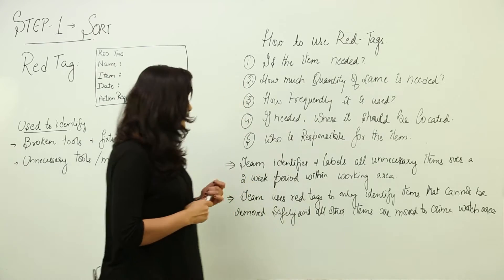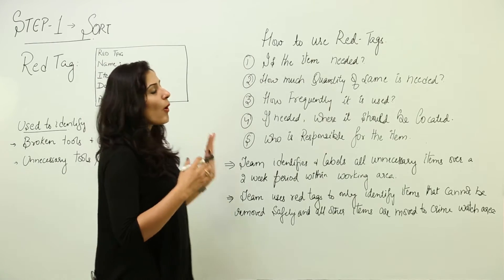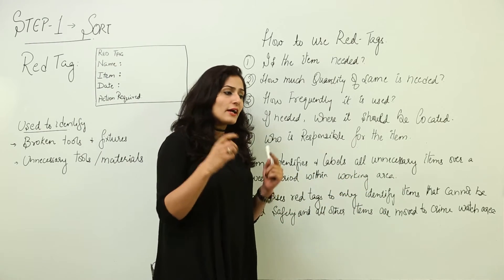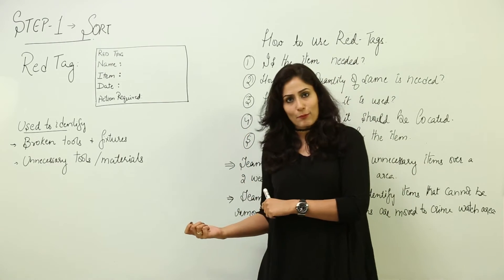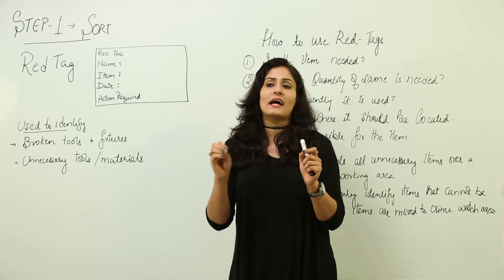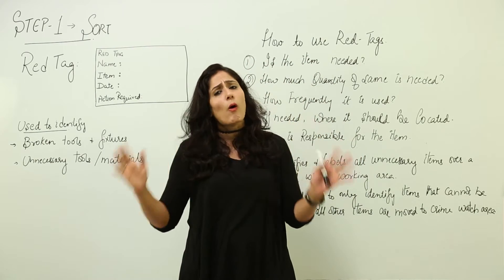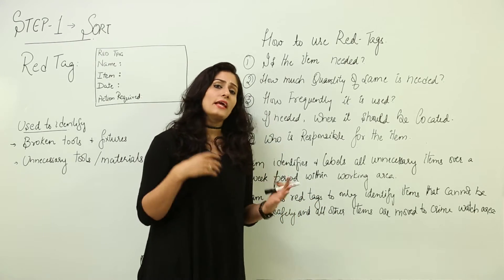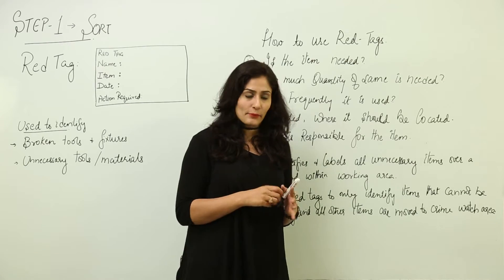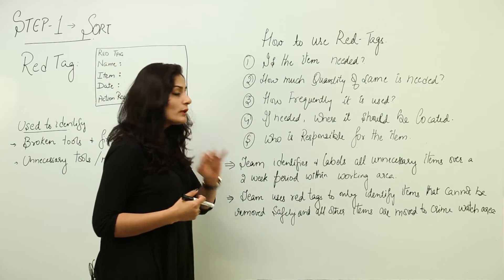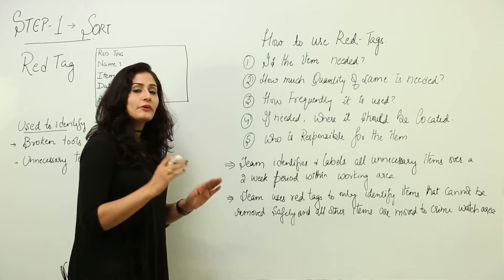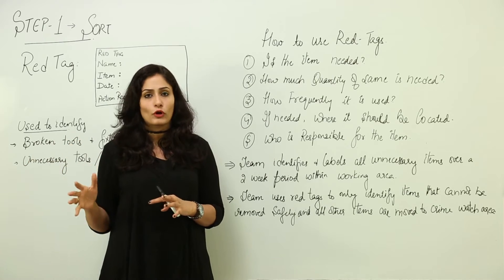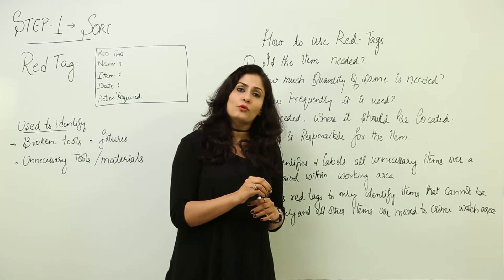There are basically two approaches when red tagging. The first approach: the team identifies and labels all unnecessary items over a two-week period within the working area. They start with the sort phase and red tag all items which are not necessary. The second approach is the blitz approach: the team uses red tags to only identify items that cannot be removed safely. All other items and potential clutter are just moved to a crime watch area, while items that cannot be removed safely or easily are red tagged by the team.